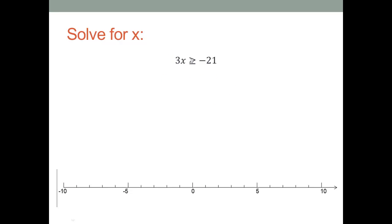Three times x is greater than or equal to negative twenty-one. We want one x, and we already have our variables on the left hand side and constants on the right hand side. Let's divide both sides by positive three. That gives us x is greater than or equal to negative seven.